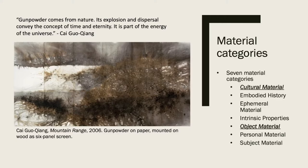In this piece on the left by Tsai Guo-cheng, his mountain range piece was created using gunpowder on paper. After doing more research on gunpowder and its history and on the artist himself, we decided that this piece and gunpowder in particular fit into the categories of cultural material and object material. For our own research, Lisa and I found that most of our work was based around the intrinsic property categories, which includes how the material informs the form and construction of the work.